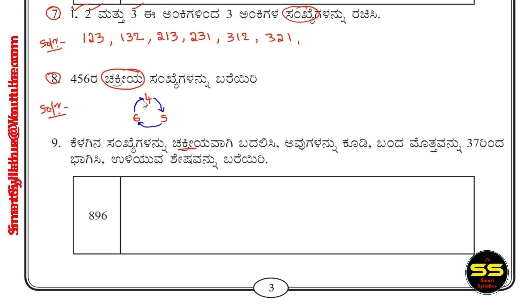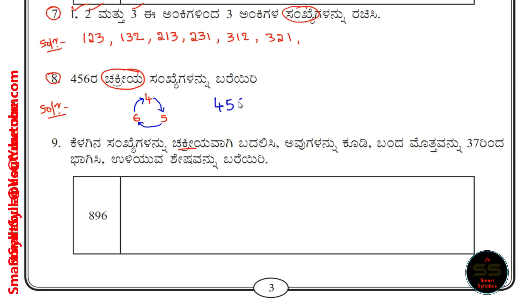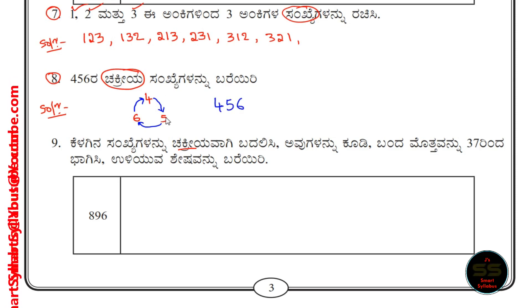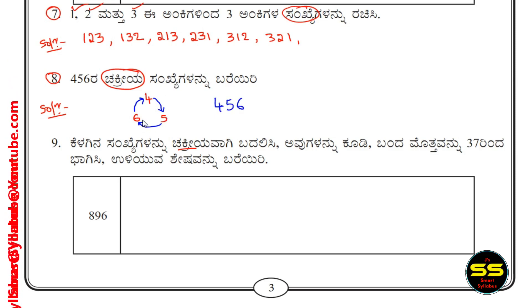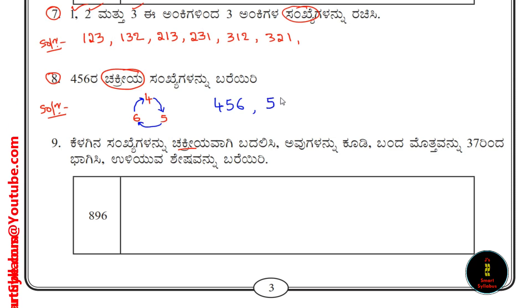Next, R is 4. This is the Chakra Sankhya. The first one is 4156. So 4, 5, 6. Next, we will start the Sankhya. So 5, 6, 4. So this is 5184.